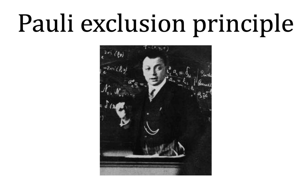A more rigorous statement is that, concerning the exchange of two identical particles, the total many-particle wave function is antisymmetric for fermions and symmetric for bosons. This means that if the space and spin coordinates of two identical particles are interchanged, then the total wave function changes its sign for fermions and does not change for bosons.